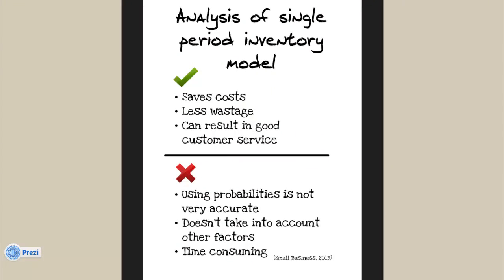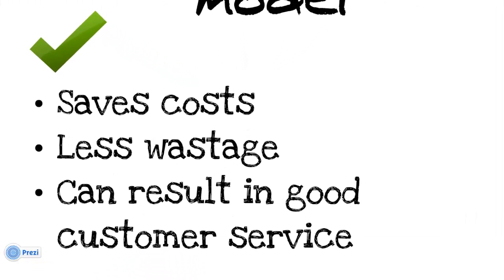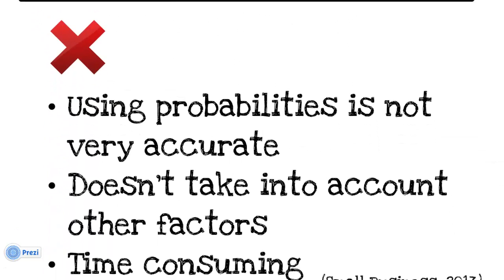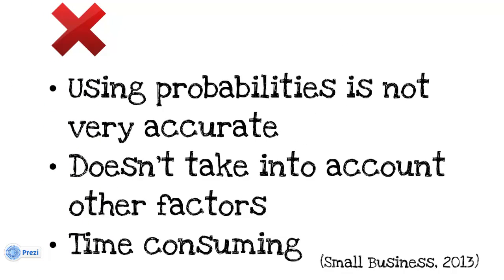Now we will analyse the model. The clear advantages are that it saves costs as the optimal amount of stock is being ordered, therefore there is less wastage so the business owner does not have to throw stock away. Also, having the right amount of stock greatly improves customer service as the customer can buy the item they want as it is in stock and they can therefore fulfil their want or need. However, there are some drawbacks to the model. Firstly, using probabilities is not always very accurate as it doesn't allow for particularly quiet days or particularly busy days, so stock could still be wasted or run out, known as a stock out.